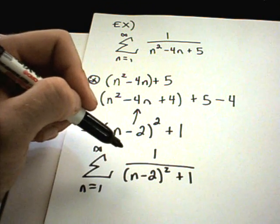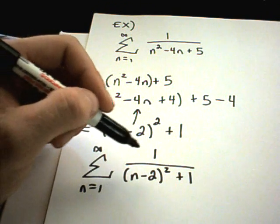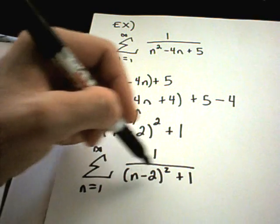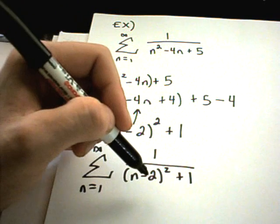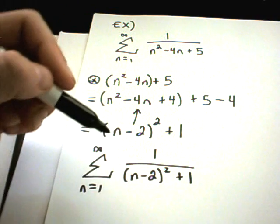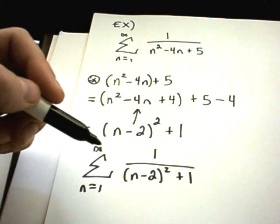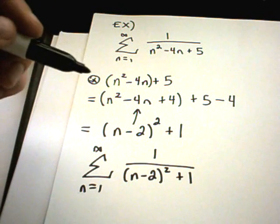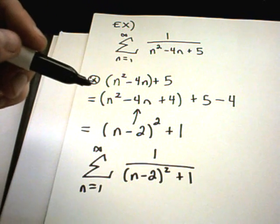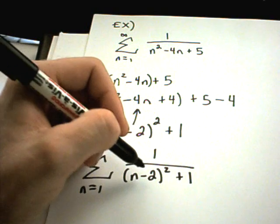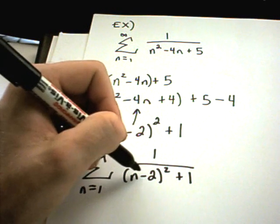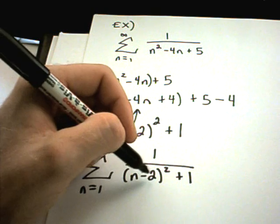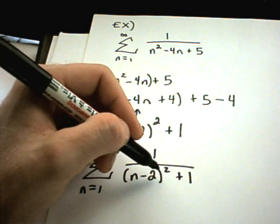And if you look at this problem, again, there's a couple things that may make you nervous. Again, is there anything in the denominator that's going to make this 0? Well, definitely not in this problem. You know, if you plug any number into the n minus 2 part, you're either going to get 0 or a positive or negative number. But when you square it, it's going to become positive.